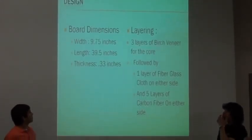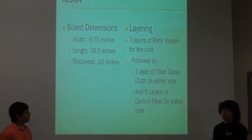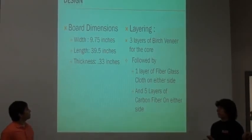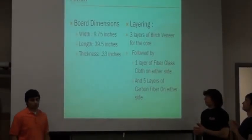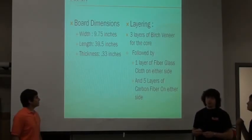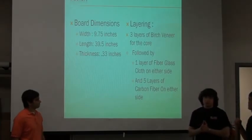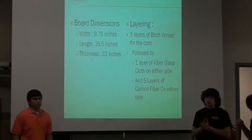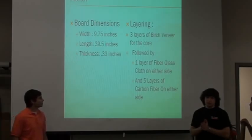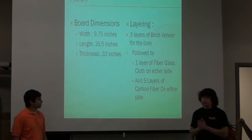So, our original design, our final design, the board dimensions are 9.75 inches with a length of 39.5 inches, which is approximately a meter, and a thickness of .33 inches. For the layering of the board, we chose three large veneer layers wrapped with one layer of carbon fiber on either side, and then wrapped with five layers of carbon fiber.